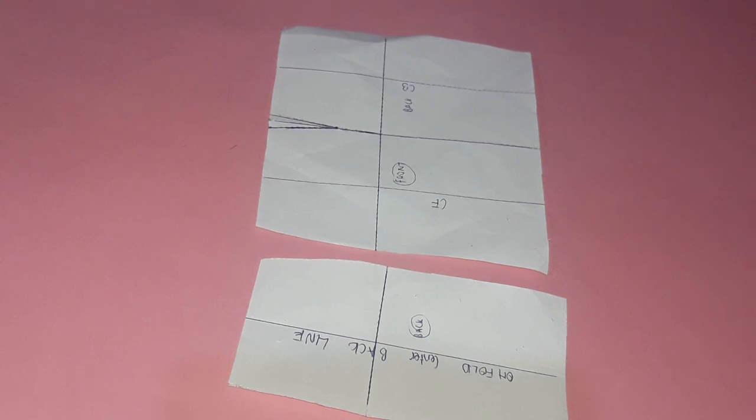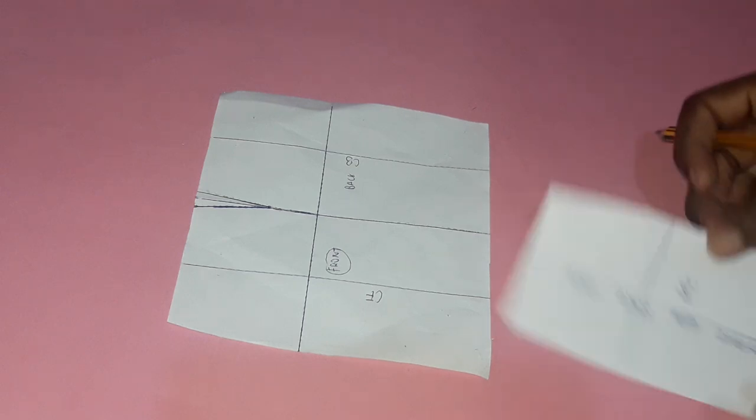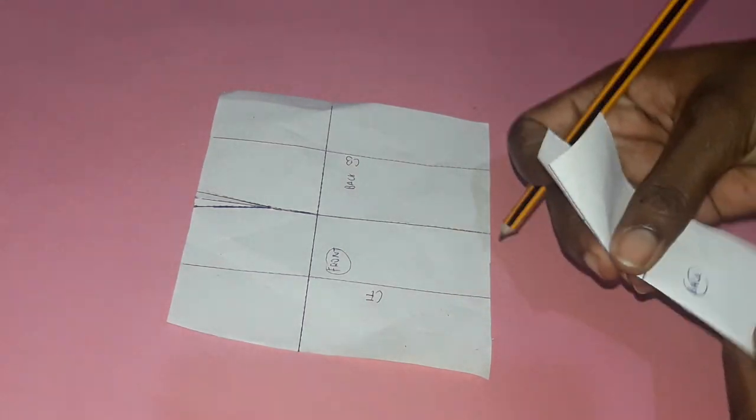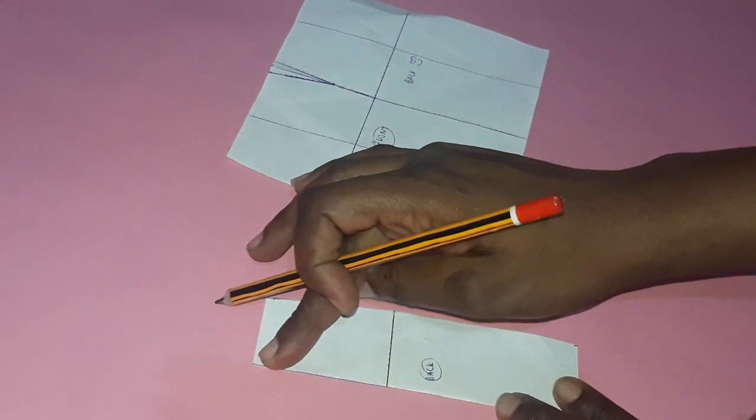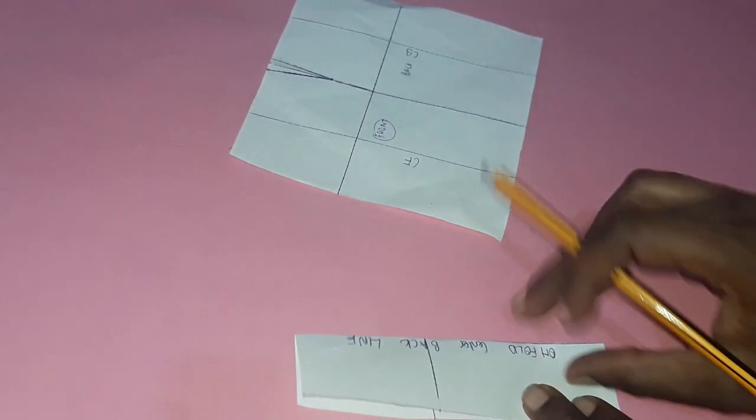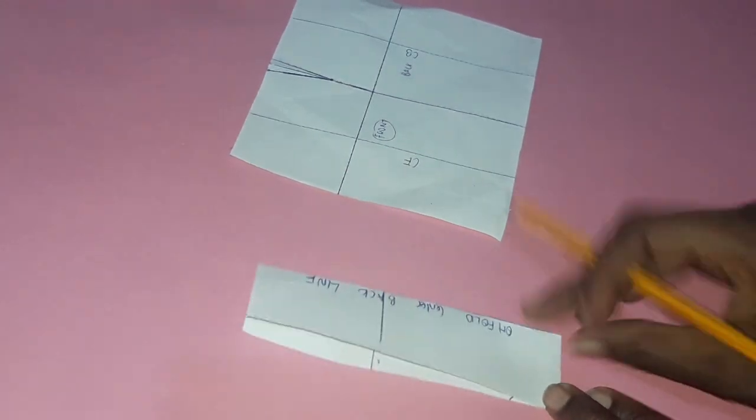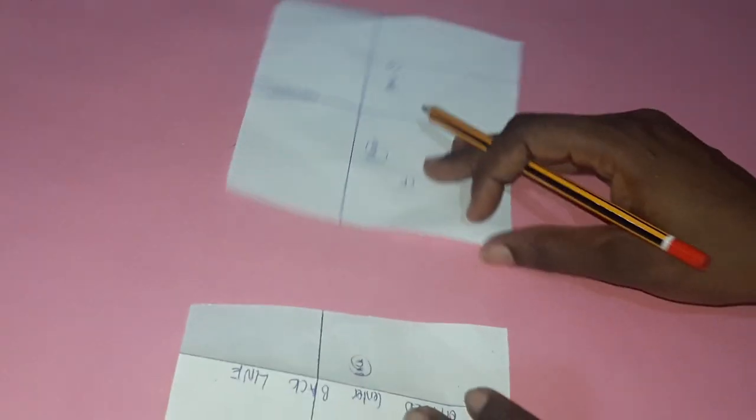Now the first thing you're going to say is why does my skirt pattern look this way? Yes, normally you're supposed to have something like this - this is center back and this is your back pattern, and then this is center front. So you'd have two pieces, one for your back and one for your front.